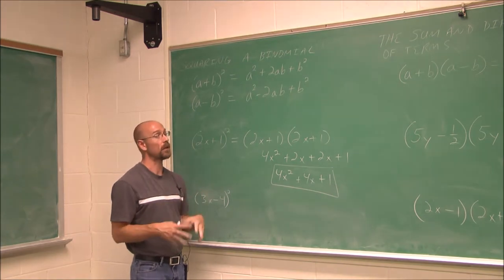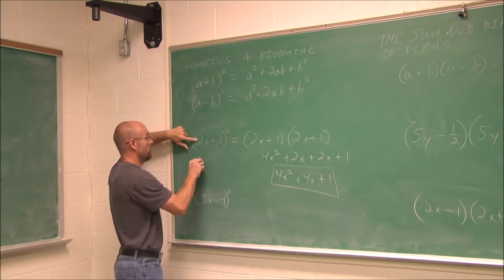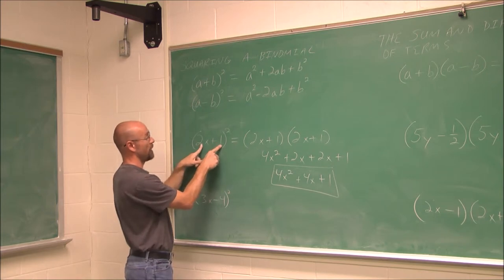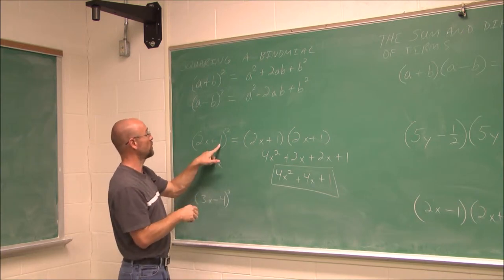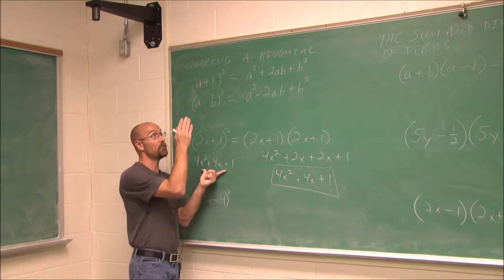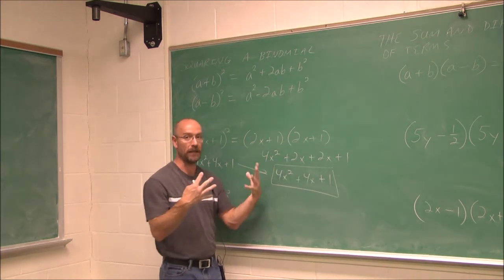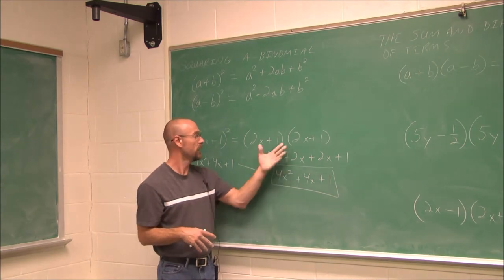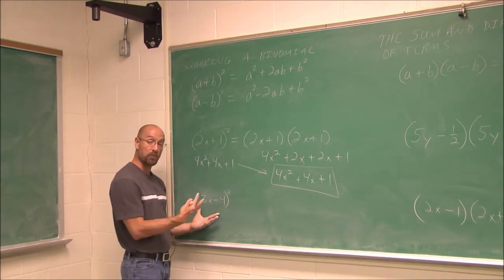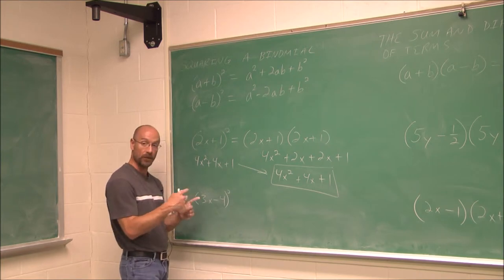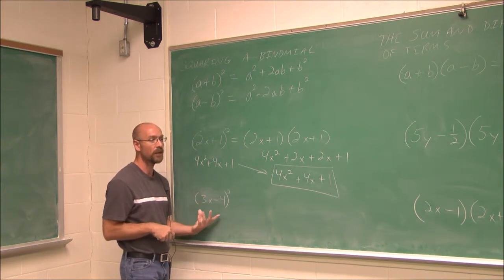What if we used the formula instead of FOIL? If we have it committed to memory: the first term squared is 4x squared; twice the product of a and b is 2 times 2x times 1, which is 4x; and the last term squared is 1 squared, which is 1. Same answer: 4x squared plus 4x plus 1, without all the intermediate steps. For practice, write the expression as two binomials and use FOIL, then try it using the formula. Commit the formula to memory — it'll help you a lot.